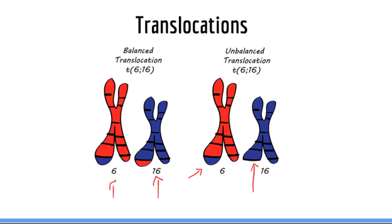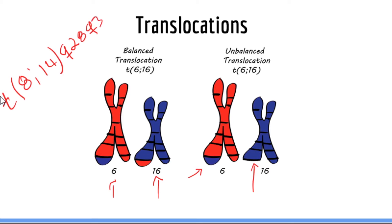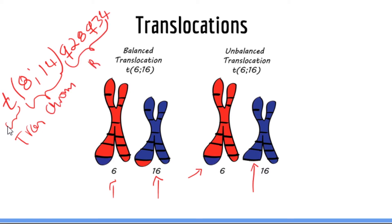I also want to familiarize you with the nomenclature used for structural mutations. In the case of a translocation, you would write a T followed by an open parenthesis, the smaller number of the chromosome involved, followed by the larger number of the chromosome involved, and then the bands. For example, this tells you that it is a translocation between chromosomes 8 and 14 involving the bands Q28 and Q34. The T stands for translocation, the second set of numbers stands for the chromosomes involved, and the last pair of numbers tells you which bands within the chromosomes.